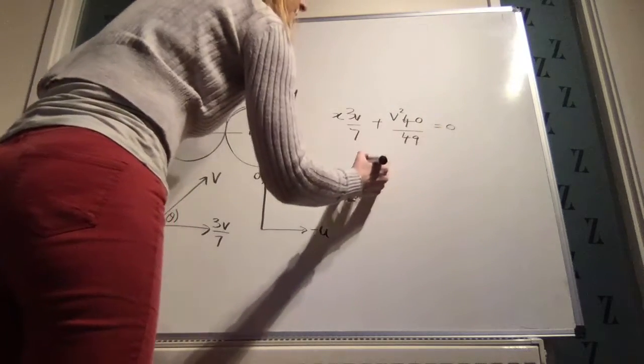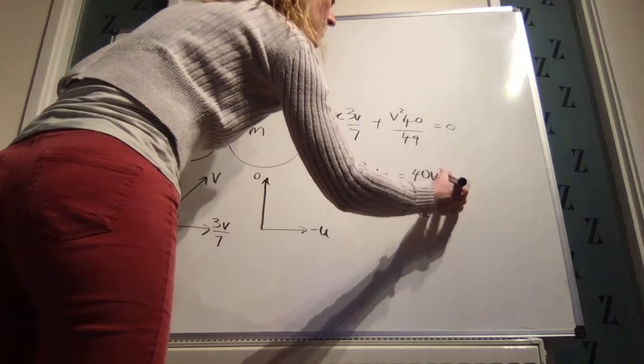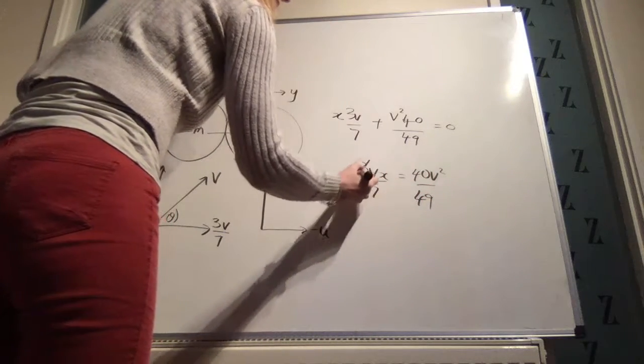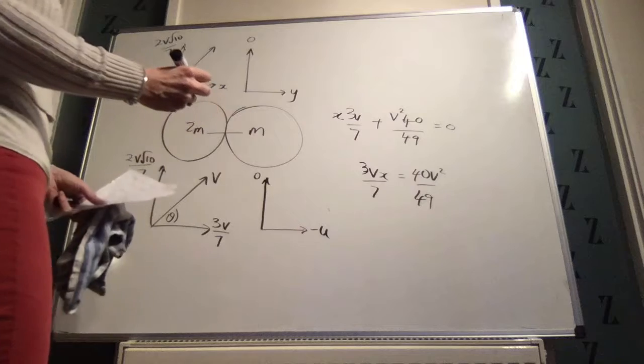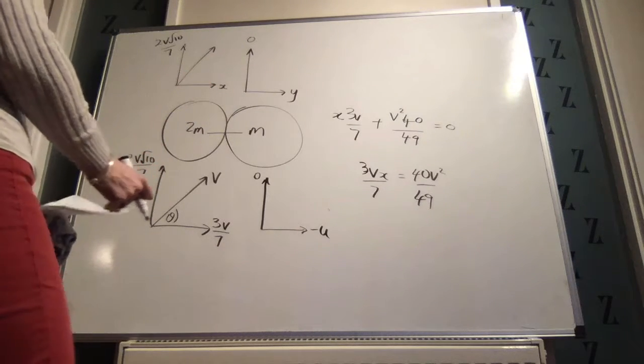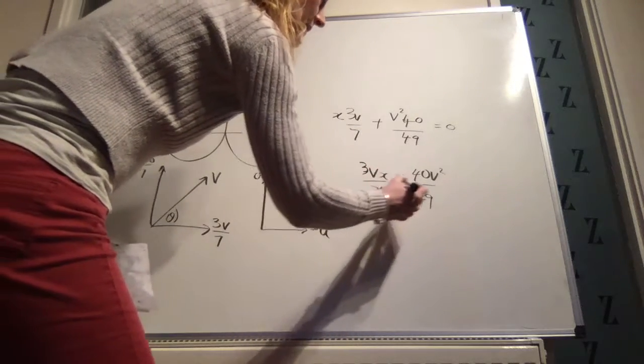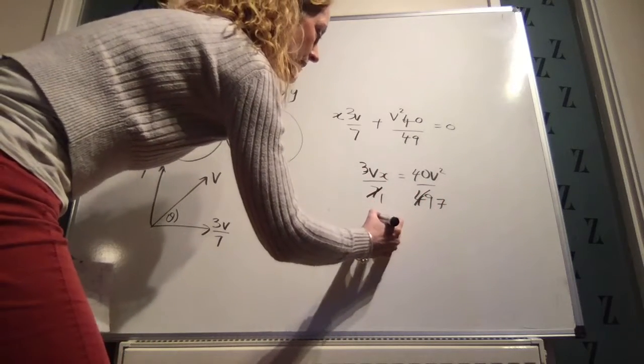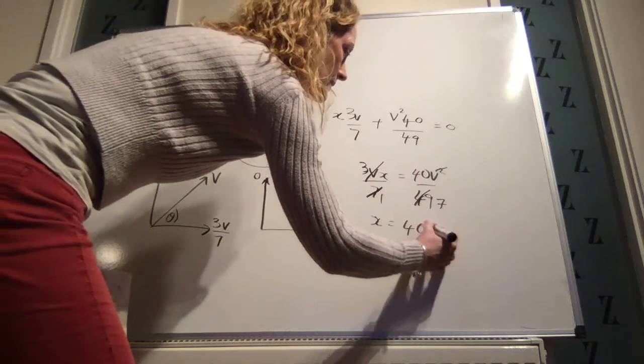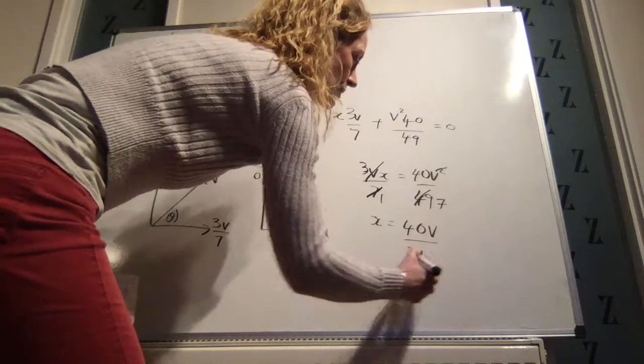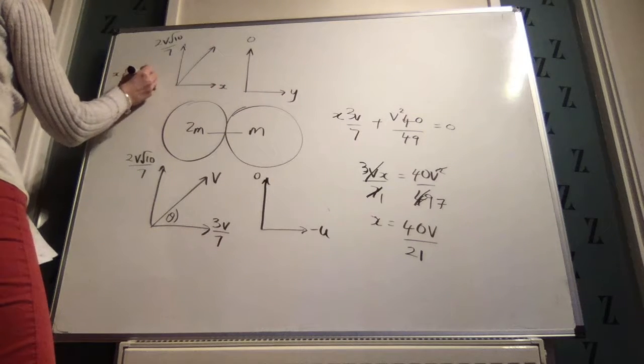So that gives us 3vx over 7 is equal to minus 40v squared over 49. So we get x is equal to minus 40v over 21. That's important, so x is equal to minus 40v over 21.